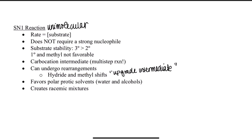SN1 reactions favor polar protic solvents, which contain acidic protons and are able to form hydrogen bonds — water and alcohols are perfect examples. Because we generate intermediates, we don't need to attack from the backside like in SN2. For stereochemistry, SN1 will create a mixture of R and S final products.